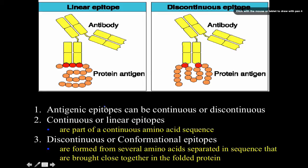There are also linear and discontinuous epitopes. Antigenic epitopes can be continuous or discontinuous. Continuous or linear epitopes are part of a continuous amino acid sequence. This is helpful for antibodies that recognize the linear primary level structure of a native protein and bind to, for example, synthetic peptides in a test tube.